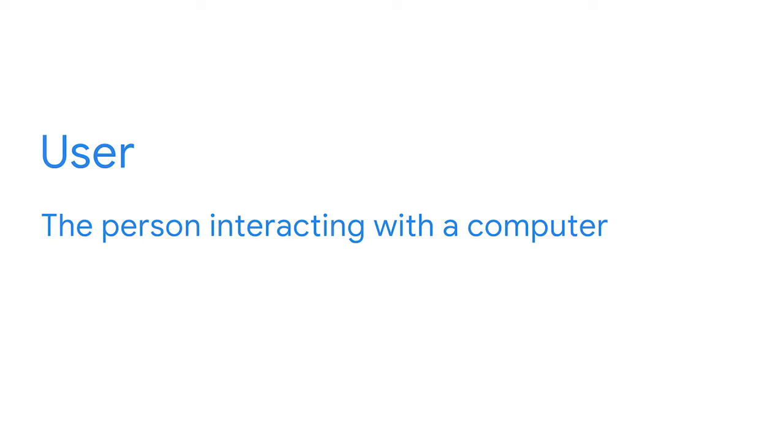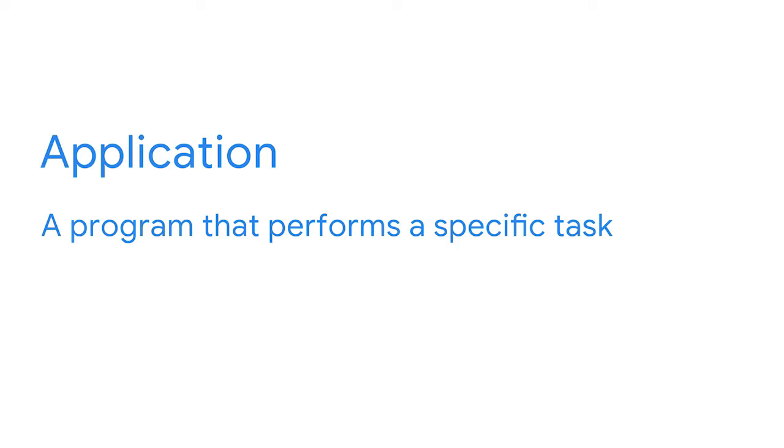You're the user — the person interacting with the computer. In Linux, you're the first element of the architecture of the operating system. You're initiating the tasks or commands that the OS is going to execute. Linux is a multi-user system, meaning more than one user can use the system's resources at the same time. The second element of the architecture is applications — programs that perform specific tasks, such as a word processor or a calculator. You might hear the words application and program used interchangeably.